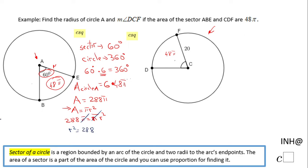So r will be the square root of 288. You do not have to put the plus and minus since we're talking about radius, which is a positive number. And 288 is 144 times 2, and we can simplify the square root of 144 as 12.